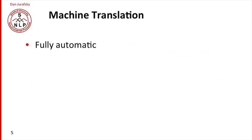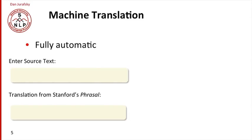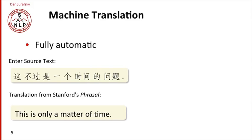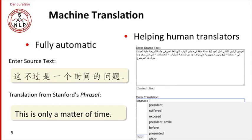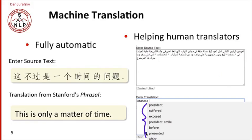Machine translation is another important new application. It can be fully automatic — for example, Stanford's phrasal MT system translating a source sentence in Chinese into English. But MT can also be used to help human translators. For instance, given an Arabic text, the human translator might need help from the MT system — such as a collection of possible next words that the system builds automatically.